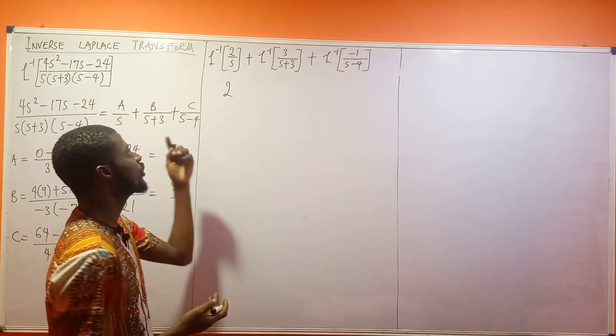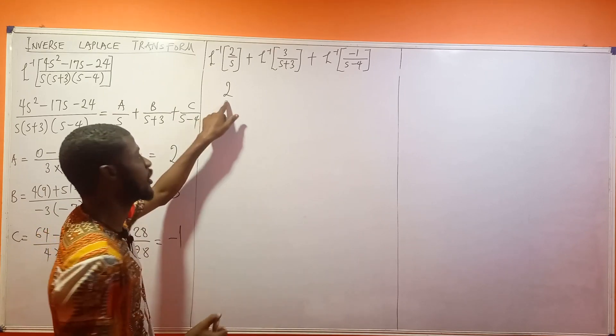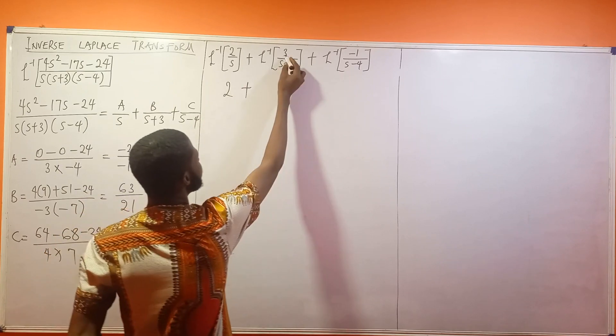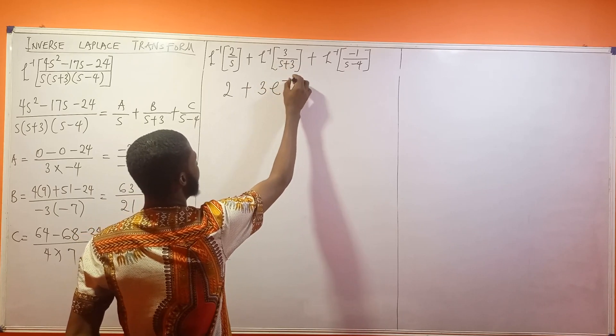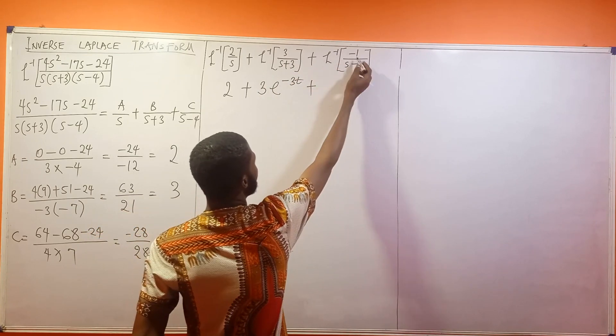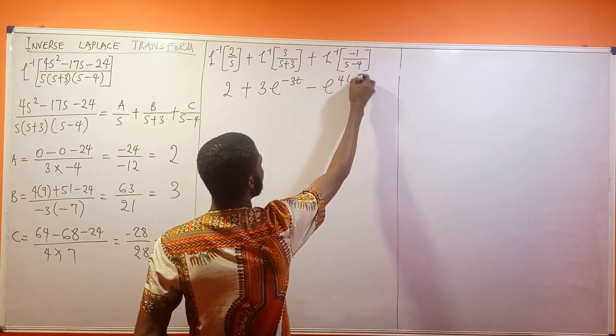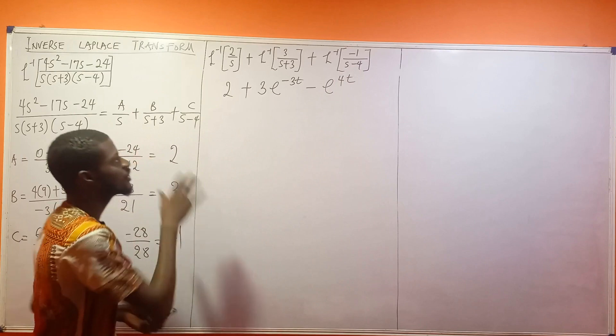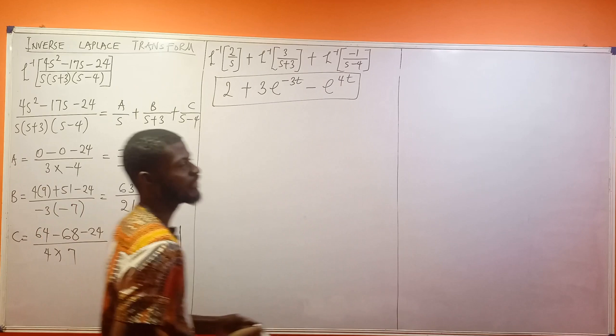Let us find the inverse Laplace of everything on the board. The inverse Laplace of 2 over s gives you just 2, because for you to get 2 over s, the function that was transformed is actually a constant. Plus, this 3 is a constant, so this is 3. If you have 1 over s plus 3, this is exponential minus 3t. Then plus, we have minus 1 here, so minus exponential 4t, because we have s minus 4 here. This is the final result to that question.